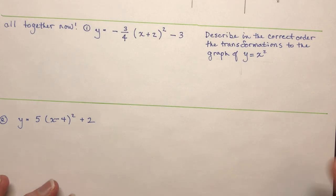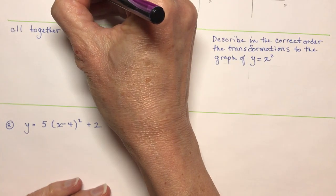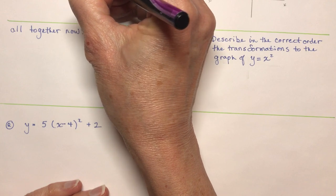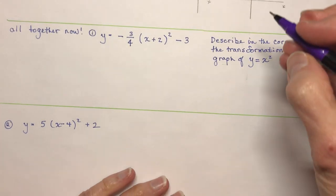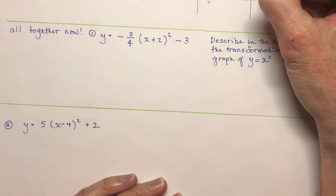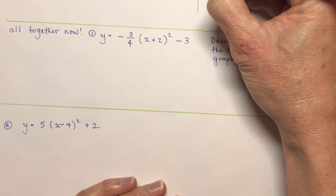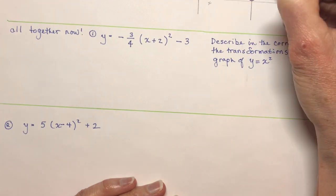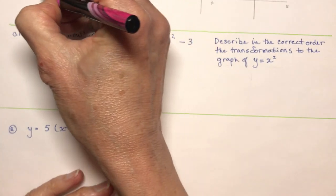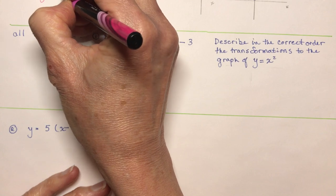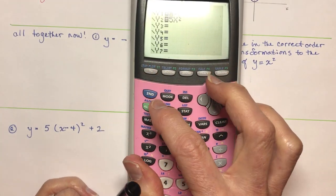Now let's go on to a horizontal shift. The equation we're working with is y equals x minus h, all squared. So a horizontal shift — if I have y equals x squared as my parent function, the most basic parabola, and now I do y equals x minus 2 squared, I'll put this on the calculator because it's going to show you something that's kind of counterintuitive.